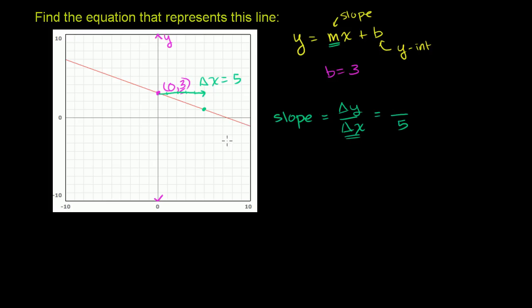That's our change in x. Now what's our change in y? Well, we have to go down 2. So our change in y, when our change in x is positive 5, our change in y is negative 2.